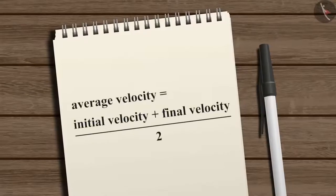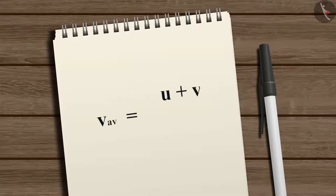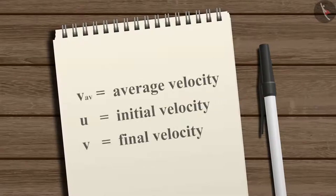Average velocity equals initial velocity plus final velocity, divided by 2. Mathematically, V_average equals (U + V) divided by 2, where V_average is the average velocity, U is the initial velocity, and V is the final velocity.